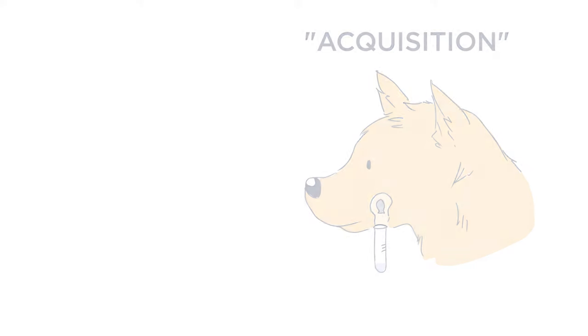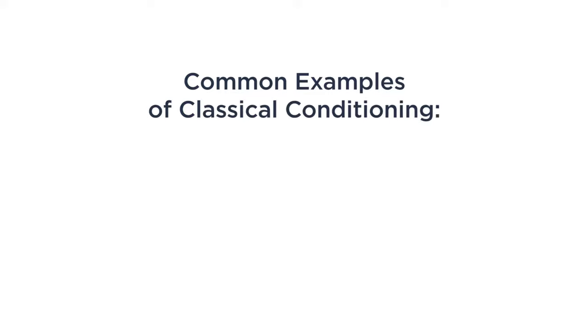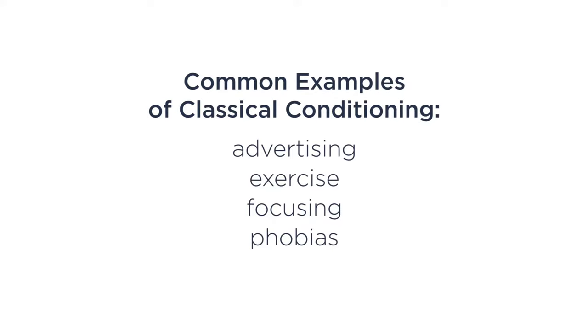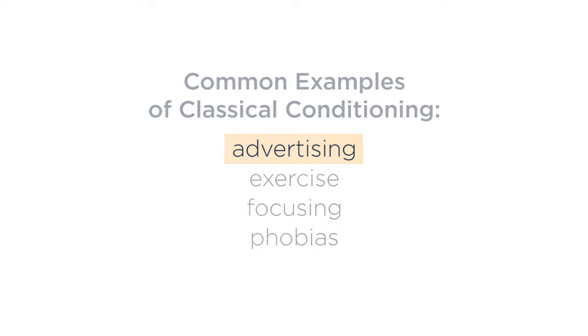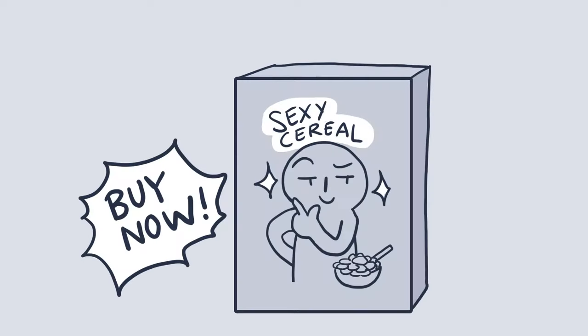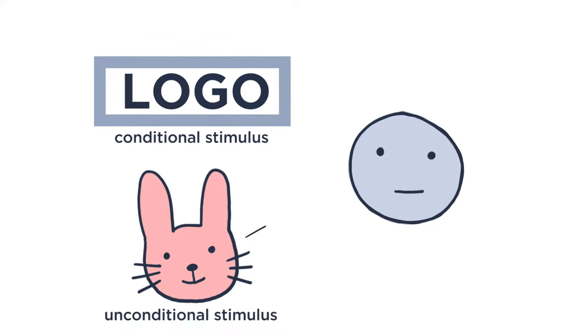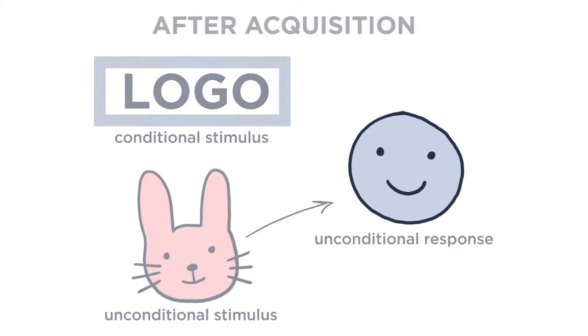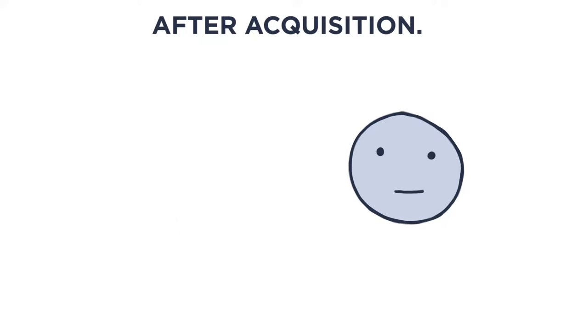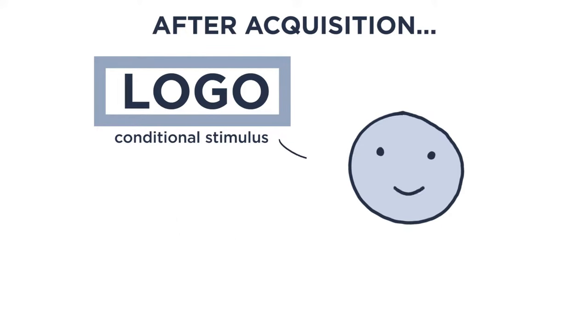With this model, we can look at some common examples of this phenomenon. Much of advertising relies on classical conditioning. Ads are often an effort to associate a company logo with some desirable stimuli — be it cute, sexy, or wholesome. For example, if you show a logo alongside a cute animal that makes you feel happy, after acquisition, the logo itself will also make you feel happy.